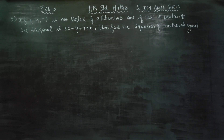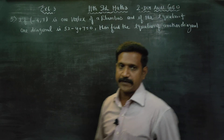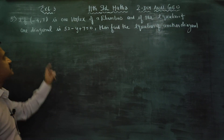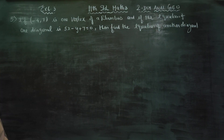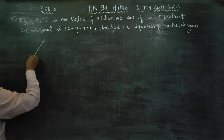Dear 11th Standard Students, I am Mitro Kalman. X is number 6.3, sum number 5. If minus 4, C is one of the vertex of a rhombus.